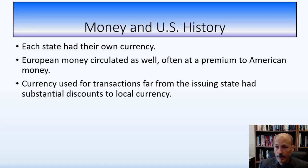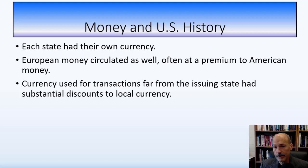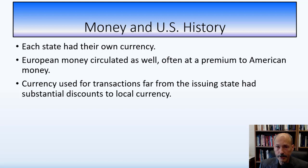Europe, on the other hand, had uniform currencies like the pound, and their coins often circulated in America at a premium to American money. With 13 colonies each issuing money that looked different, when someone handed you a Connecticut dollar you'd wonder if it was real. Counterfeit paper circulated all over the economy, and there was a substantial premium for European money — especially Spanish dollars and gold and silver coins — relative to local currency and paper.